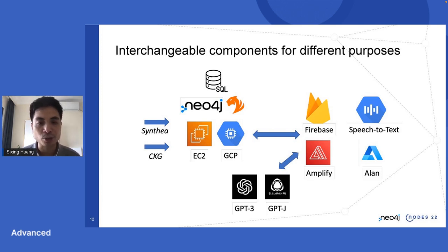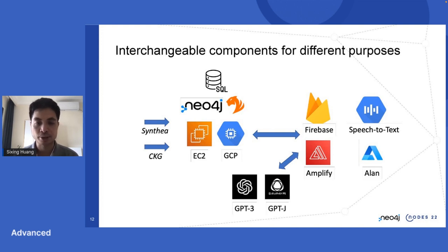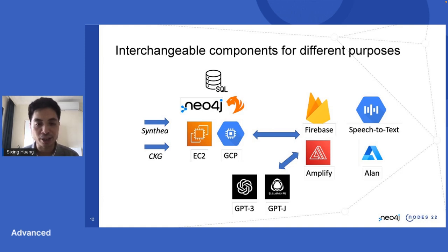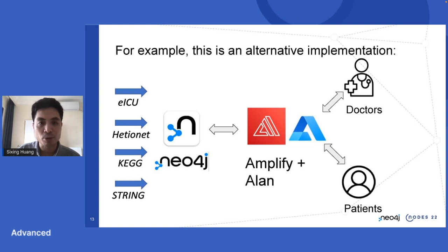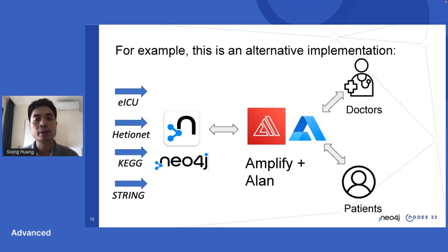Doctor AI is not a fixed app — it is more like a framework. You don't need to use GPT-3, Amplify, or EC2 specifically; you can switch the components. For example, if you don't like to use Alan, you can use Google Speech-to-Text. If you have a better natural language understanding engine later, you can replace GPT-3 with something else. One example we have is using Alan Studio, which has its own natural language understanding engine, to replace GPT-3 entirely.